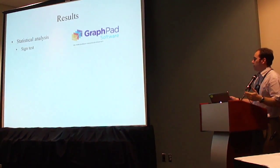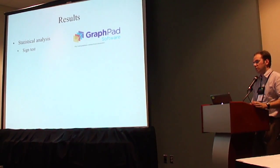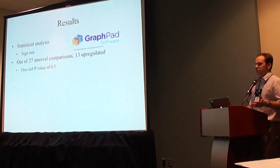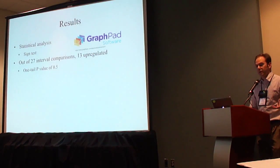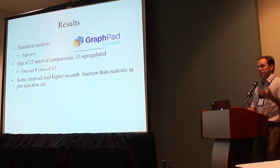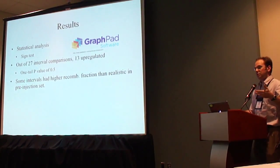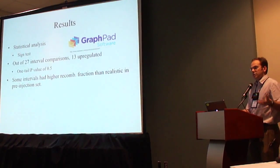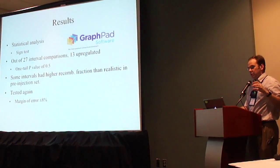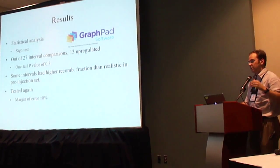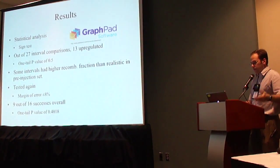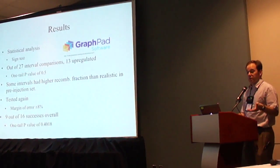I subjected my results to statistical analysis using GraphPad QuickCalc's free online statistical software. I performed a sign test, and what I found was that out of 27 interval comparisons, only 13 experienced upregulation, giving a one-tail P value of approximately 0.5 — not statistically significant. I noticed some intervals had higher recombination fractions than realistically expected in the pre-injection set, so I filtered out those with a pre-injection value more than 8% greater or lesser than the expected value from a third-generation recombination map by Solomon Ackinall. Of the resulting 16 intervals, only 9 experienced upregulation, with a one-tail P value of 0.401 — again, not statistically significant.